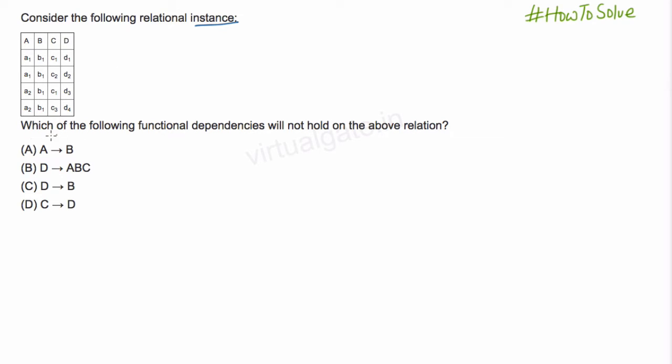Now it's a snapshot of basically a database table, and which of the following functional dependency will not hold on the above relation. Not - you have to always take care of this 'not'. It may be confusing if you do not concentrate on this 'not'. You may think that it is asking for which of the following functional dependency is correct, and that is why you may go wrong. You have to be careful.